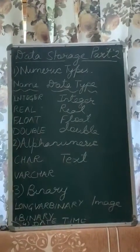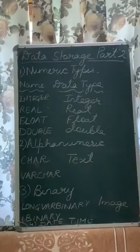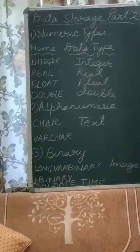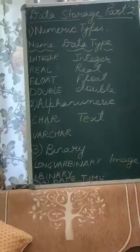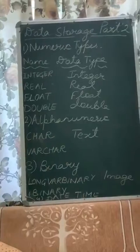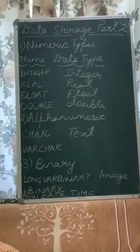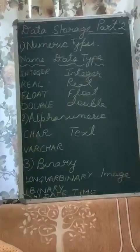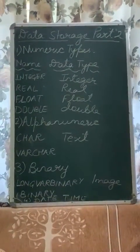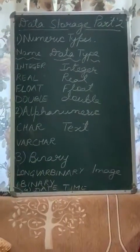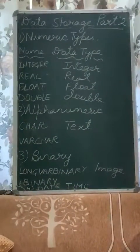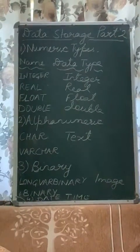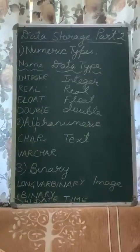In the following table I have shown the name of the data type and what you will write in programming. This numeric type is used to store integer values — the data type is INTEGER. The second one is REAL, spelled R-E-A-L, used for storing real numbers. Then FLOAT, spelled F-L-O-A-T, used for storing decimal values.